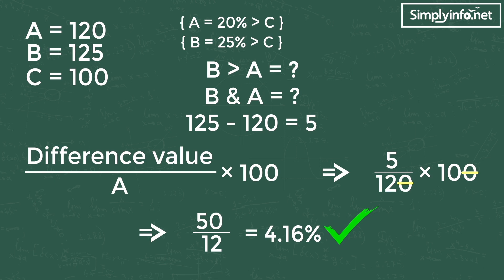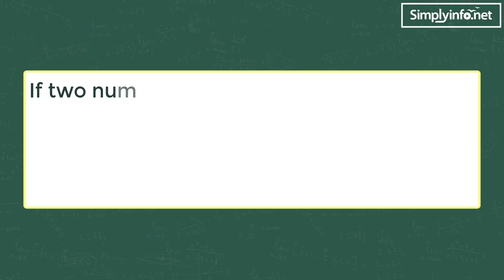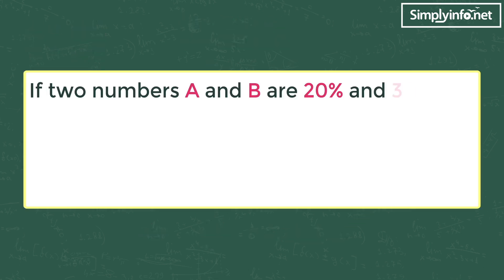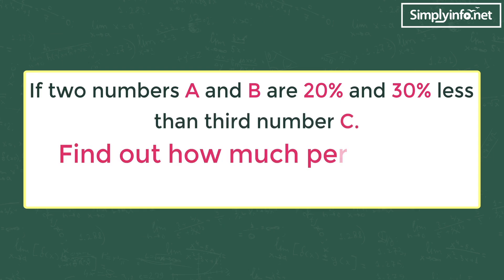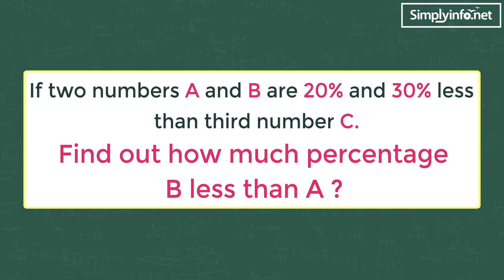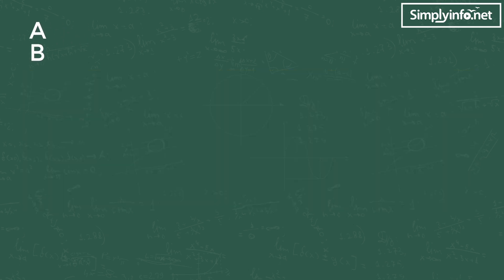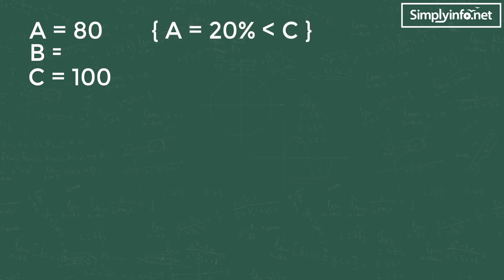Let's see another example. If two numbers A and B are 20% and 30% less than a third number C, find out how much percentage B is less than A. As we know, always consider C as 100% in this type of problem. So A becomes 80% because it is 20% less than C. So A is 80, B is 70, C is 100.